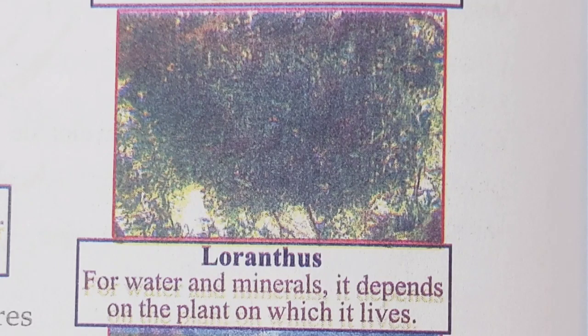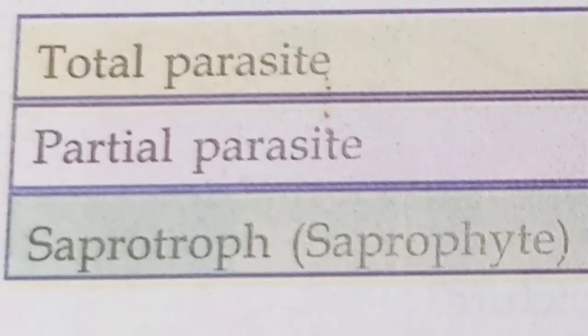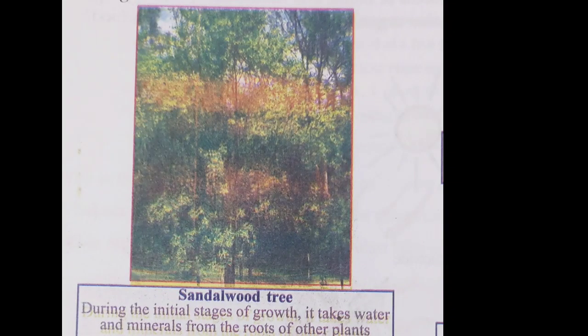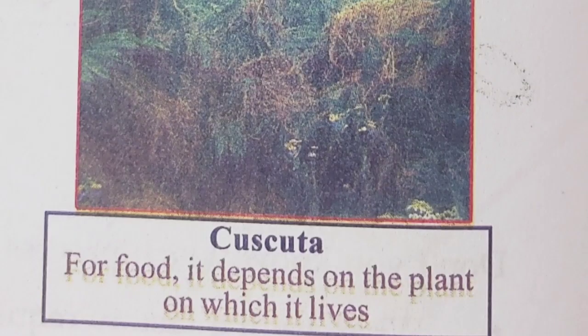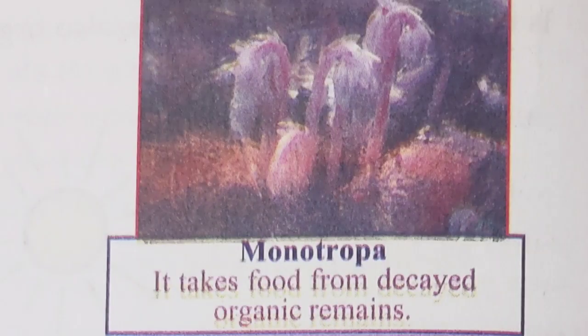We have learned earlier about heterotrophs like parasitic plants and saprophytes. Loranthus depends for water and minerals on the plant on which it lives, but they produce food through photosynthesis, so they are called partial parasites. Sandalwood tree is another example of a partial parasite. Plants that absorb food directly from the host plant are called total parasites — Cuscuta is the best example. Plants like Monotropa take food from decayed organic remains; such plants are called saprophytes. Mushroom also belongs to this category.